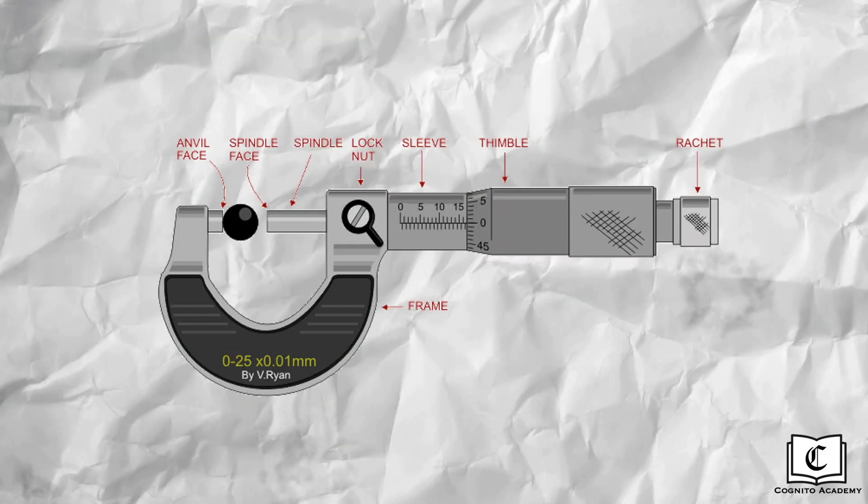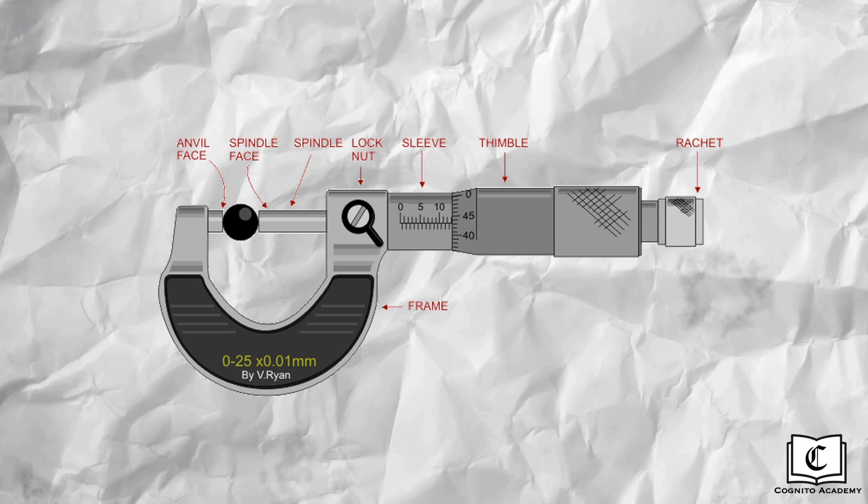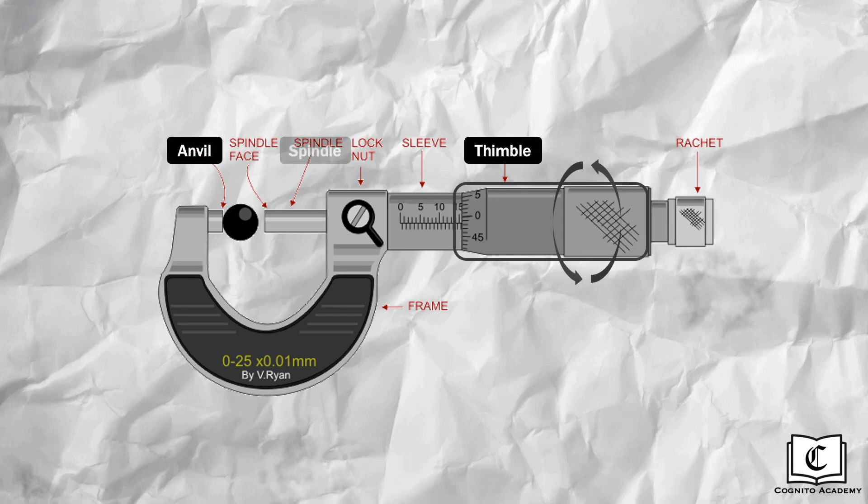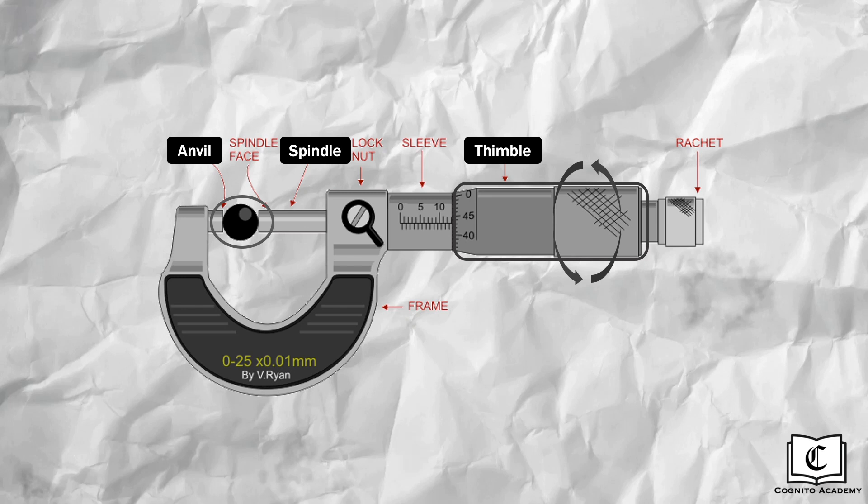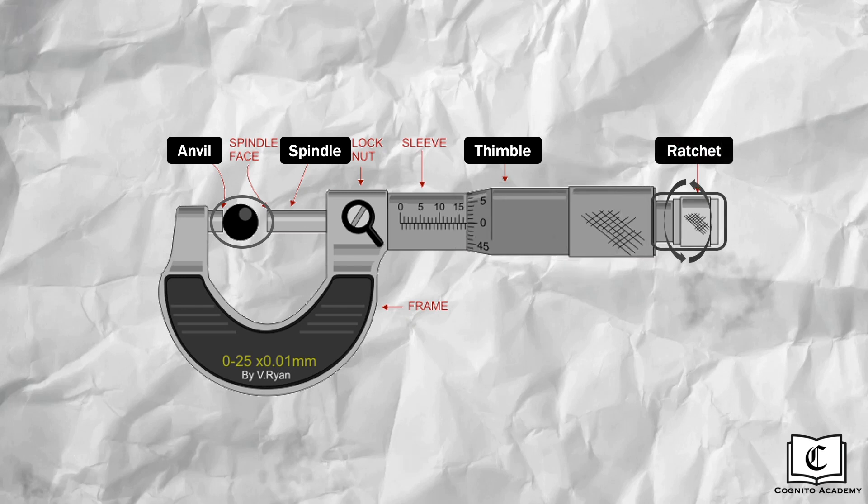Here's a look at how a micrometer screw gauge works. First, turn the timbre until the anvil and the spindle are almost touching the object. Then, turn the ratchet for minor adjustments until it makes clicking sound, which indicates the grip of the micrometer screw gauge on the object is just right for the reading to be taken.